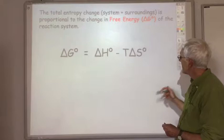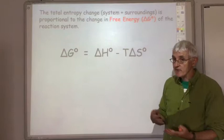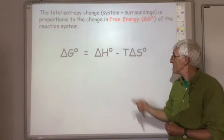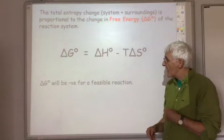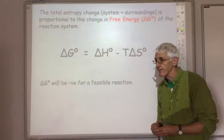How do you work out the free energy change? You use the equation delta G equals delta H minus T delta S. The delta H takes into account the entropy change of the surroundings, the delta S takes into account the entropy change of the reaction system, and T is the temperature in Kelvin. If delta G comes out as a negative value, that means there is an increase in entropy and the reaction is feasible.